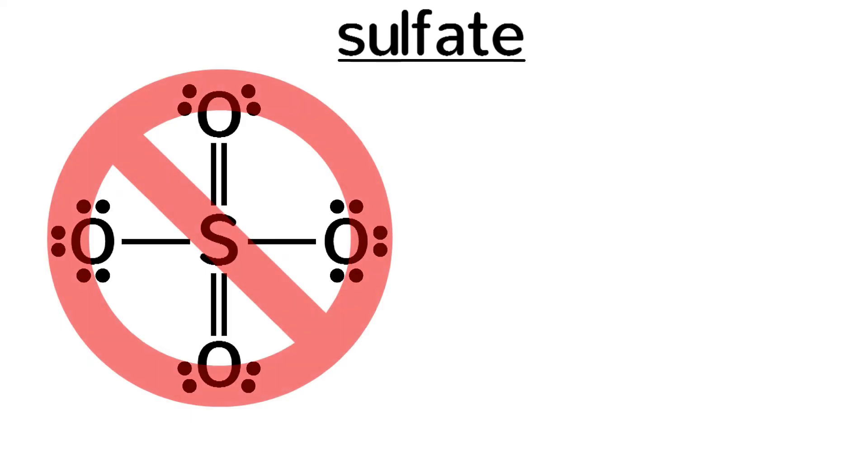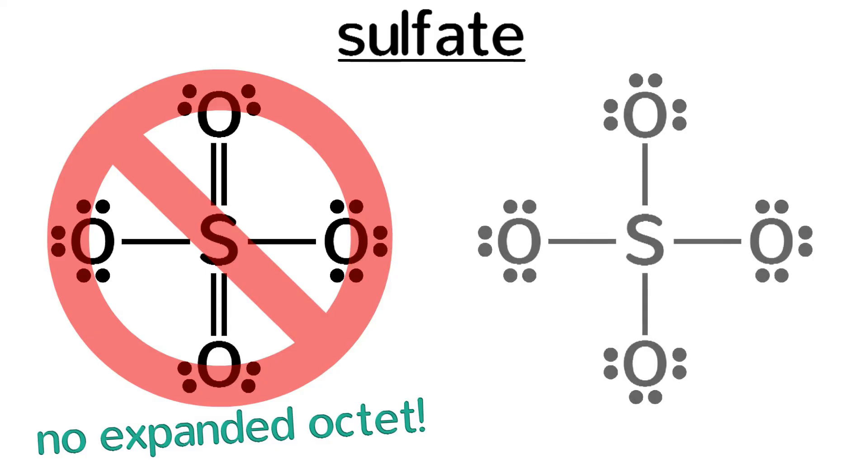Several studies using high-level calculations have demonstrated that sulfate and other similar structures do not have an expanded octet, so sulfate should not have six bonds. Instead, the best Lewis structure is this.